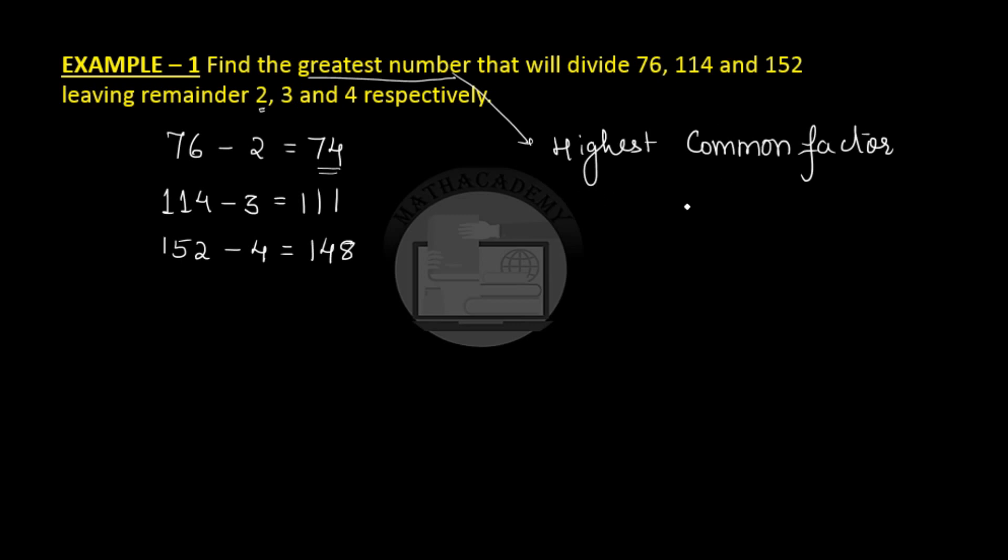So let us try to find out the HCF of 74, 111 and 148. So I will try to find out the HCF of 74, 111 and 148 by prime factorization. I will prime factorize 74. So 2 times 37. 37 is a prime number. So 37 times 1.